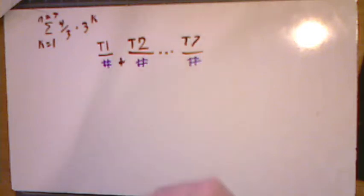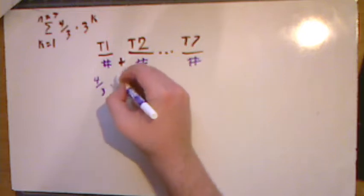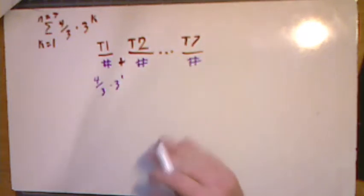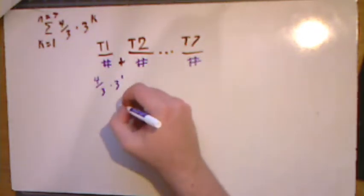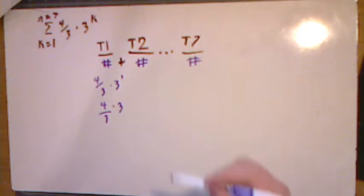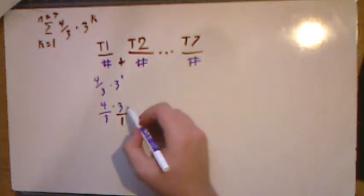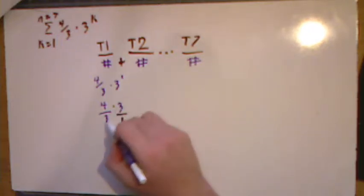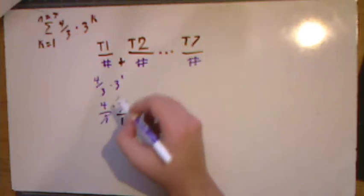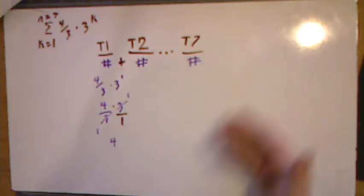For term 1, plug in k=1: 4/3 times 3 to the first power. 3 to the first is just 3, and multiplying by 4/3 means the threes cancel, leaving us with just 4 as our first term. We keep doing this for each term, but this is the long way. Instead, we turn to our formula.